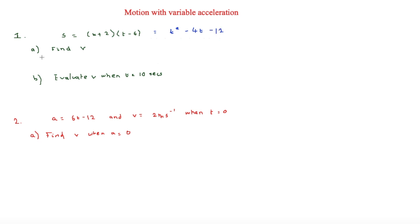It asks us to find v, so to go from displacement to velocity we need to differentiate. Differentiating t² − 4t − 12 gives v = 2t − 4. Then it asks us to evaluate v when t = 10 seconds. Substituting: v = 2(10) − 4 = 16 meters per second.